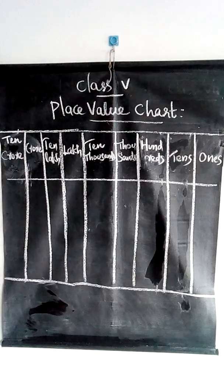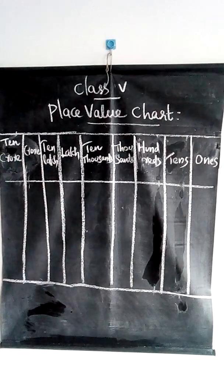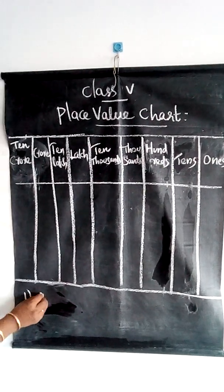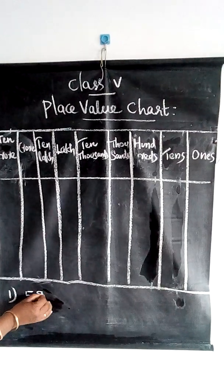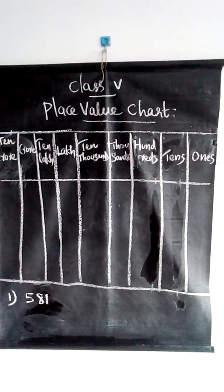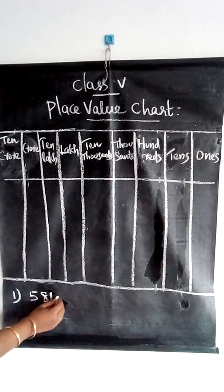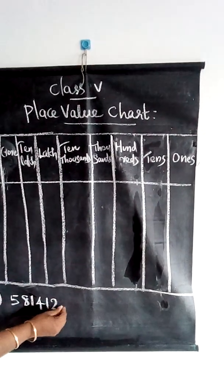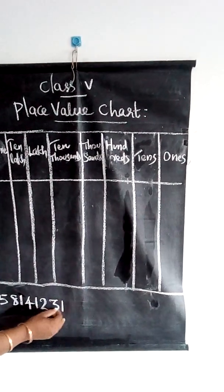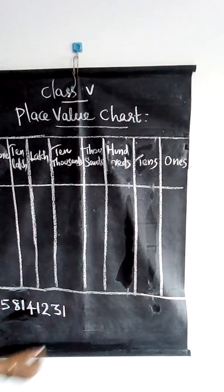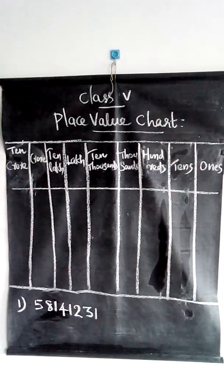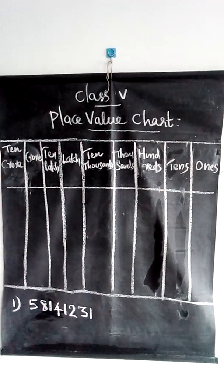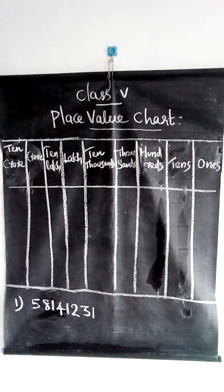The first number we studied is 5, 8, 1, 4, 1, 2, 3, 1. This is a large number. How can we write these digits in the place value chart?